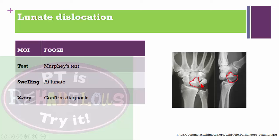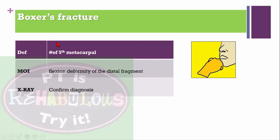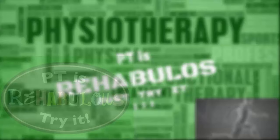In lunate dislocation, the fall on the outstretched hand causes the lunate to dislocate. Boxer's fracture: fracture of the fifth metacarpal bone, most commonly in boxers. Mechanism involves flexion deformity at the metacarpophalangeal joint. Confirmed by X-ray.